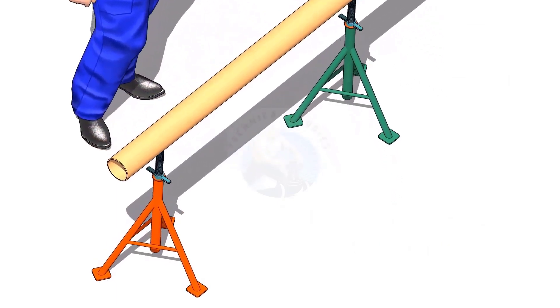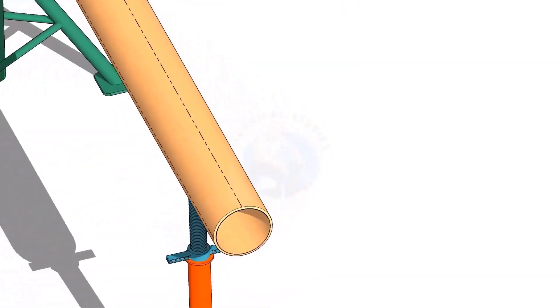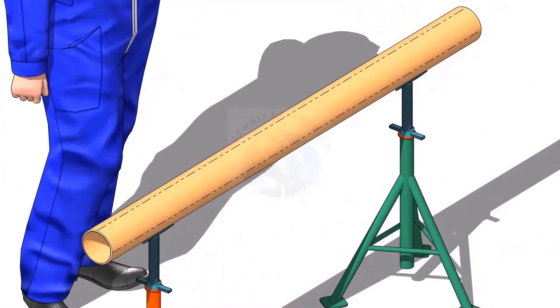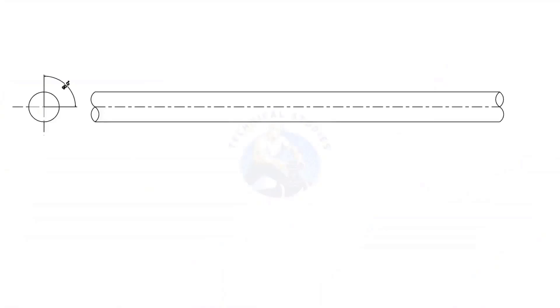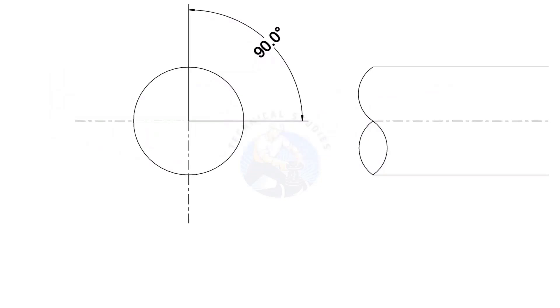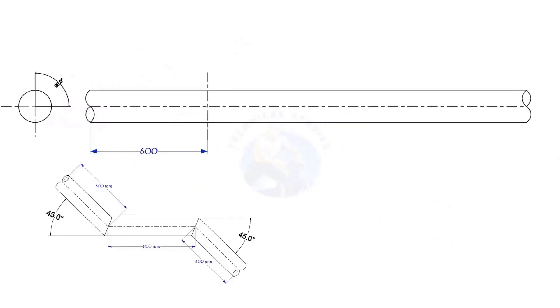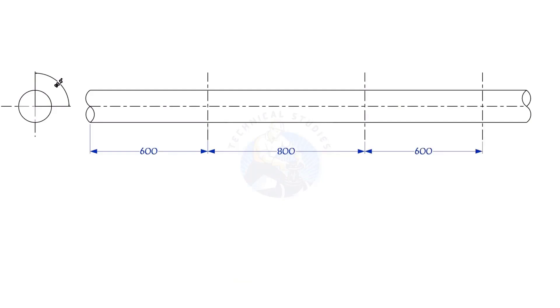Put the pipe on stands and mark 4 center lines. Mark 600, 800, and 600 millimeters respectively, as shown. Mark 35 millimeters to the right on the top side line, and 35 millimeters to the left on the bottom line.